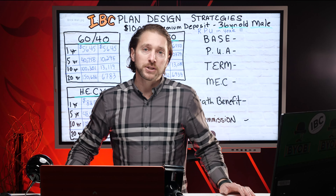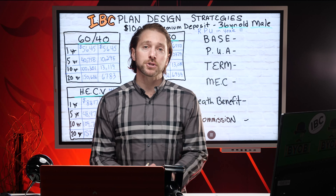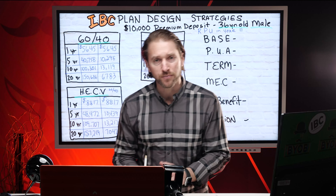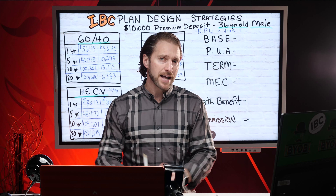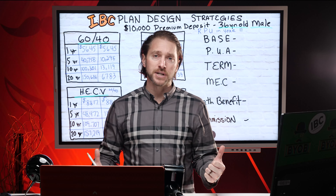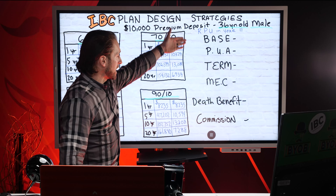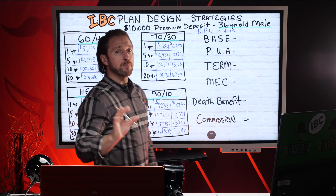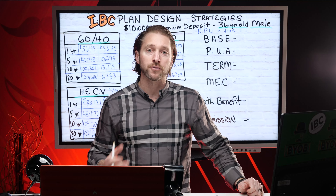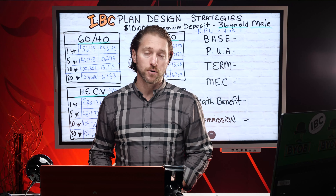In order for me to explain what all these different designs mean, you need to first understand how a whole life contract is built, because the most important thing to look at is not the design itself — it is to look at why we would design it differently for different uses. When you buy a normal whole life insurance policy from your agent, your agent is selling you a death benefit first and foremost, and the death benefit is where the cost comes in.